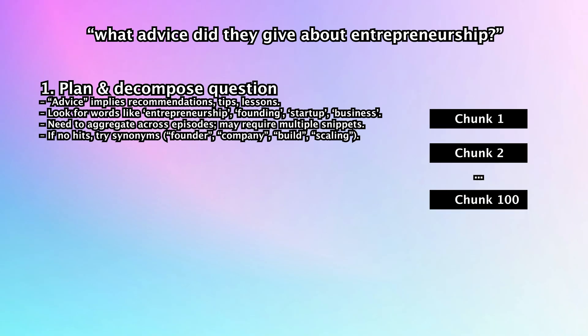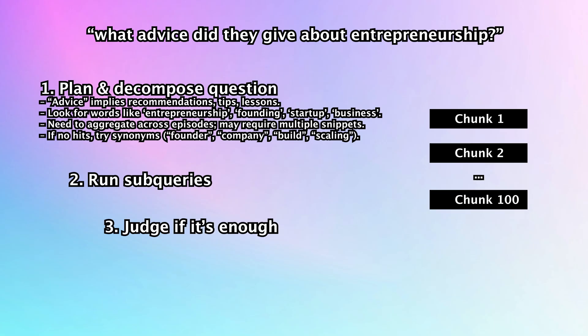And here's where agentic retrieval comes in. While RAG will only do a one-shot similarity search, agentic retrieval will decompose the question into multiple sub-queries and run them in parallel or sequence. Agents will decide where to search, write additional queries, and in the end decide when it's done. So you are certain that if the advice about entrepreneurship is split across 15 different chunks, you'll get all of them. Now let's compare them across speed, quality and cost.